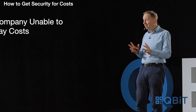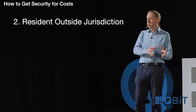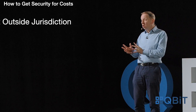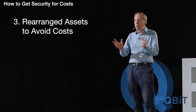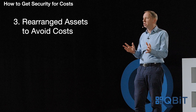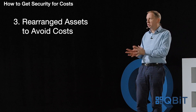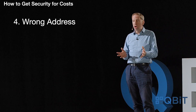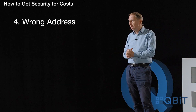The second is security against a claimant that's resident outside the jurisdiction. The third is security against a claimant who has rearranged their assets with a view to avoiding an adverse costs order. The fourth is security against a claimant that's given the wrong address or no address in the claim form.